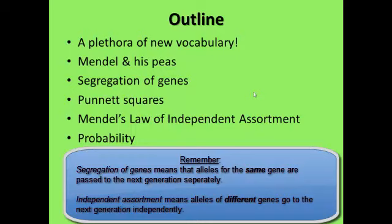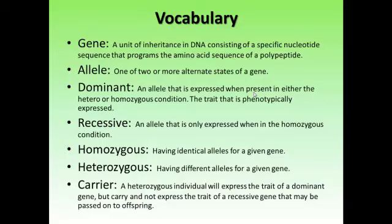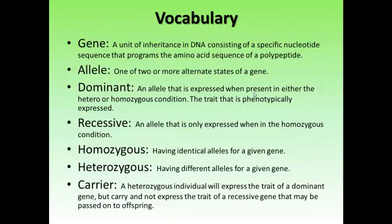We'll also discuss Mendel's Law of Independent Assortment and the probability of offspring with particular traits based on dominant or recessive qualities of genes. Now, these first two slides list the vocabulary you'll need to know. A gene is a sequence of DNA that codes for proteins in your body. An allele is a term used to describe the state of a gene — for example, she's got the blue eye allele and he's got a brown eye allele.